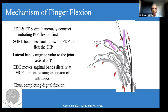So what we saw is translation of lateral bands, which were initially above the joint axis at the PIP, now becoming volar to the joint axis at PIP. Secondly, we see differential tendon gliding between FDS and FDP, giving us complete flexion of the PIP first, then DIP, and finally the metacarpophalangeal joint with the help of the intrinsics.